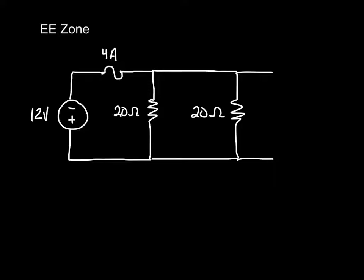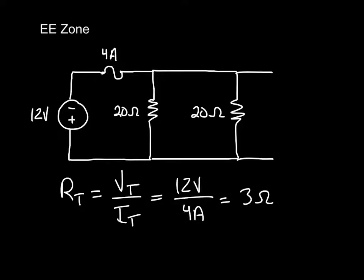So the first thing we want to do is look at total resistance for this circuit. What is the total resistance? We do that by remembering total resistance is going to be total voltage over total current. In this case, that's equal to 12 volts over 4 amps or 3 ohms. So that's one piece of the puzzle, 3 ohms for the total resistance.